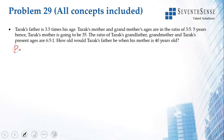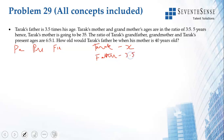Next question: Tarak's father is 3.5 times Tarak's age. Let Tarak's age be x, so father is 3.5x. Tarak's mother is going to be 35 five years hence, which means Tarak's mother is currently 30.